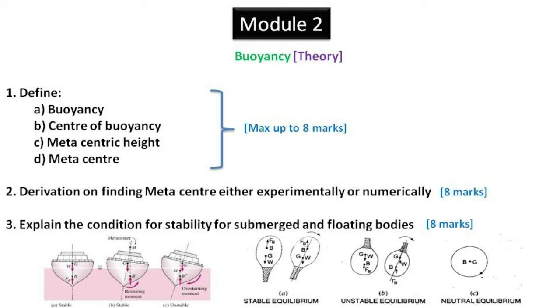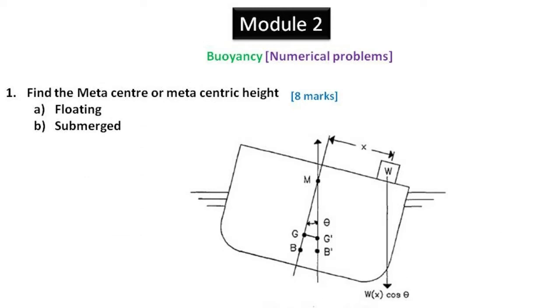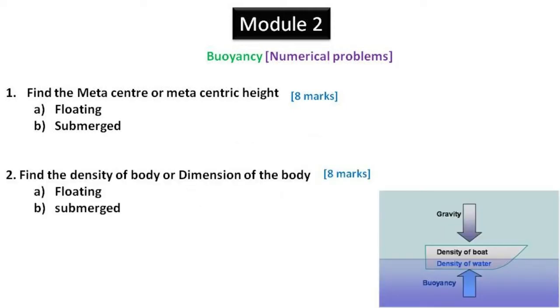Under problems, there are only two types of problems asked in buoyancy concept. One is to find out the metacentric height using the equations derived experimentally or analytically, and another is to find out the density of the body or dimension of the body.